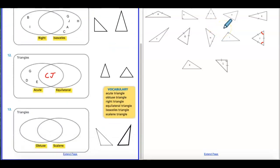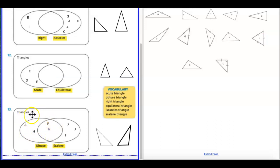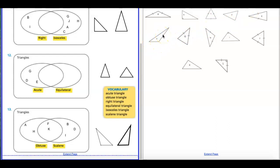One more practice — looking for obtuse angles and scalene triangles, with overlaps in the center. The ones with big obtuse angles bigger than 90 are A, H, F, and K. For scalene — all three sides different lengths — those were F, K, B, I, and D. The ones that overlap, being both obtuse and scalene, were letters F and K. So F and K go right in the center of the Venn diagram.